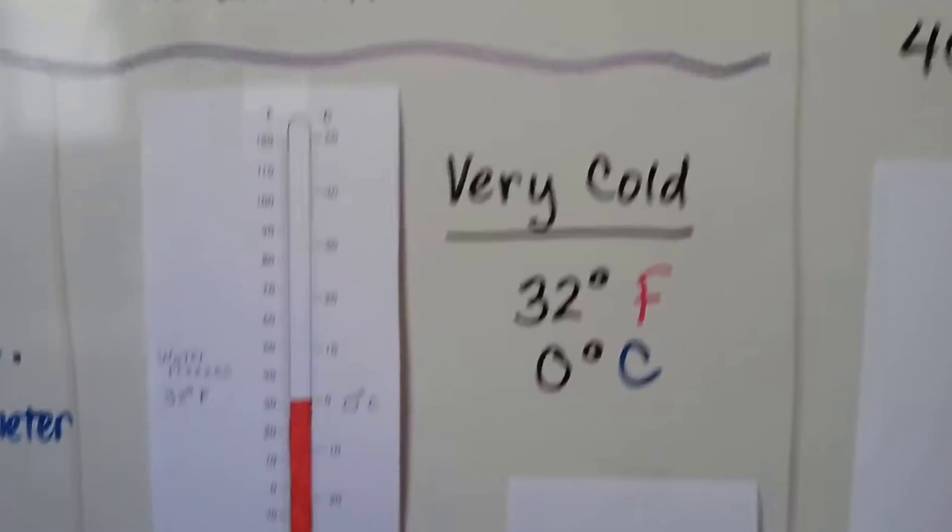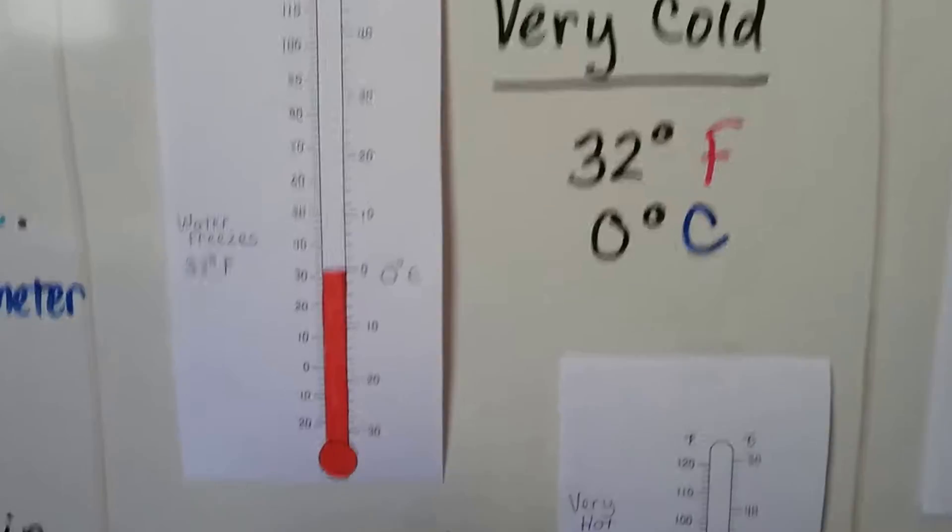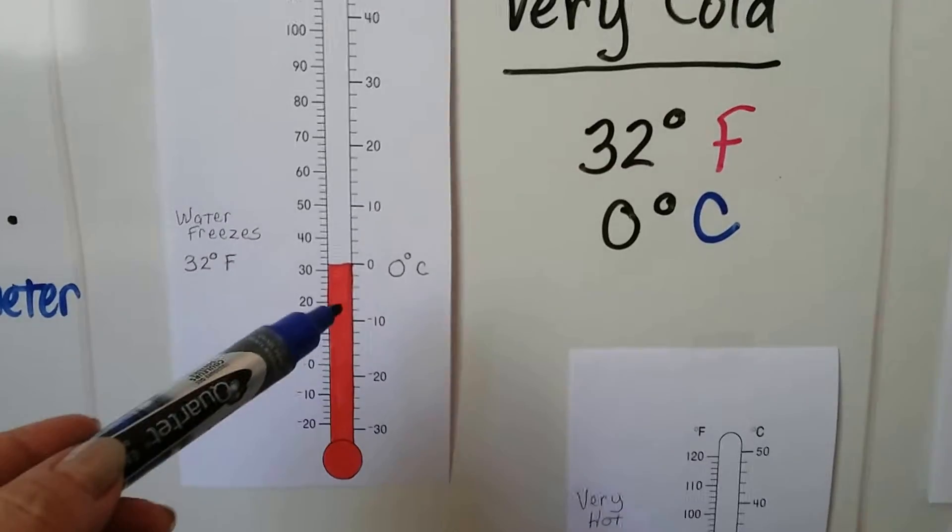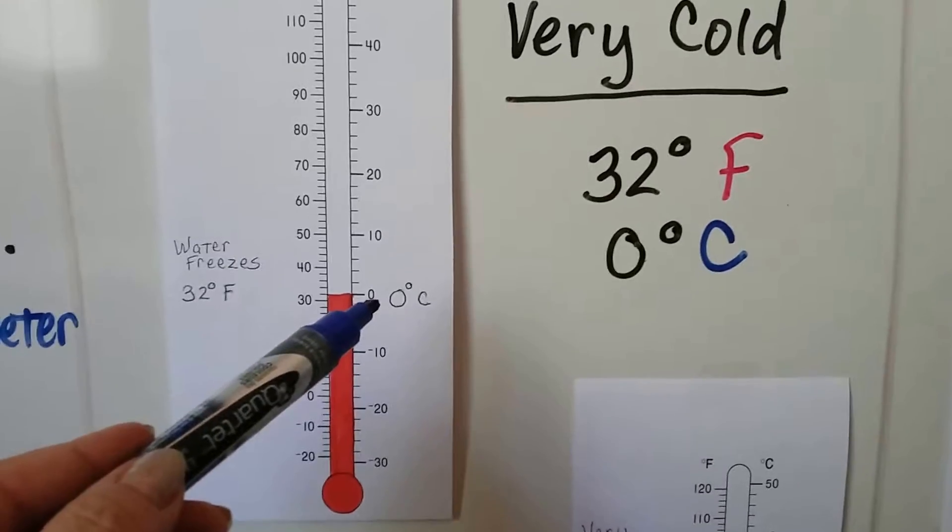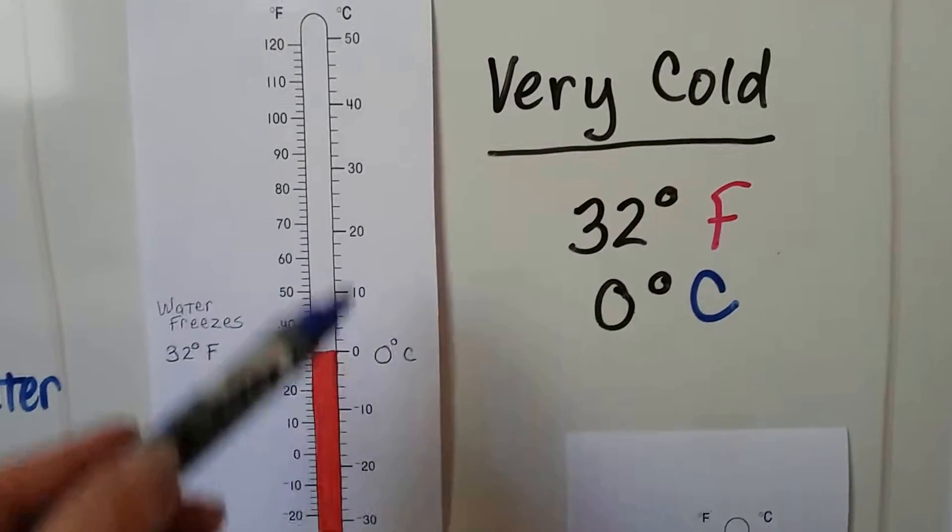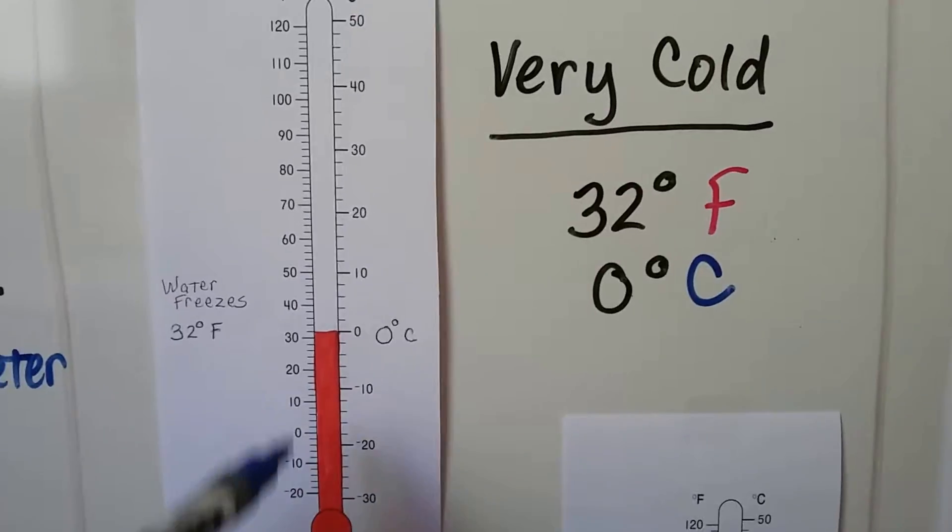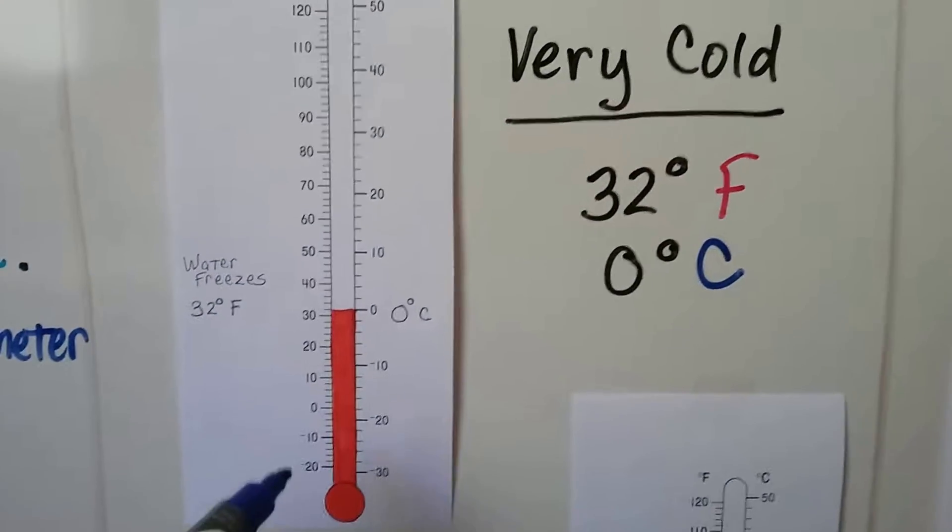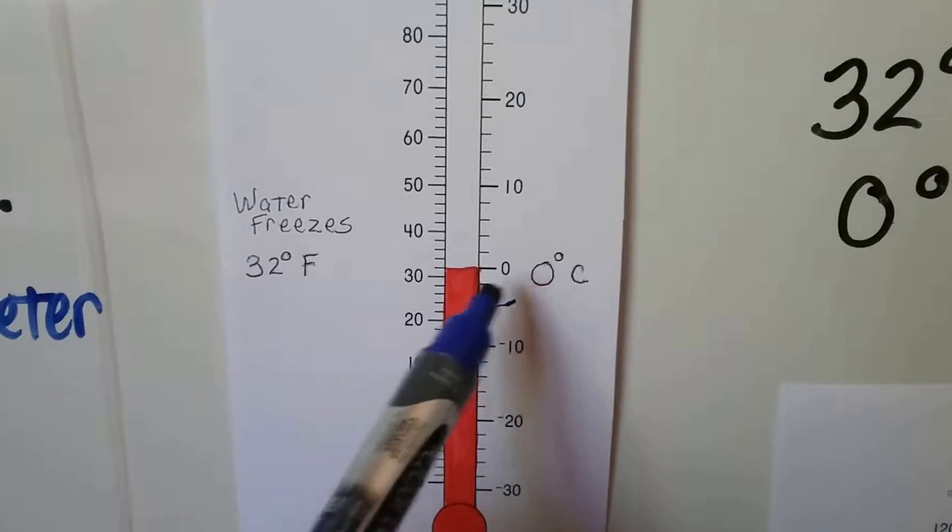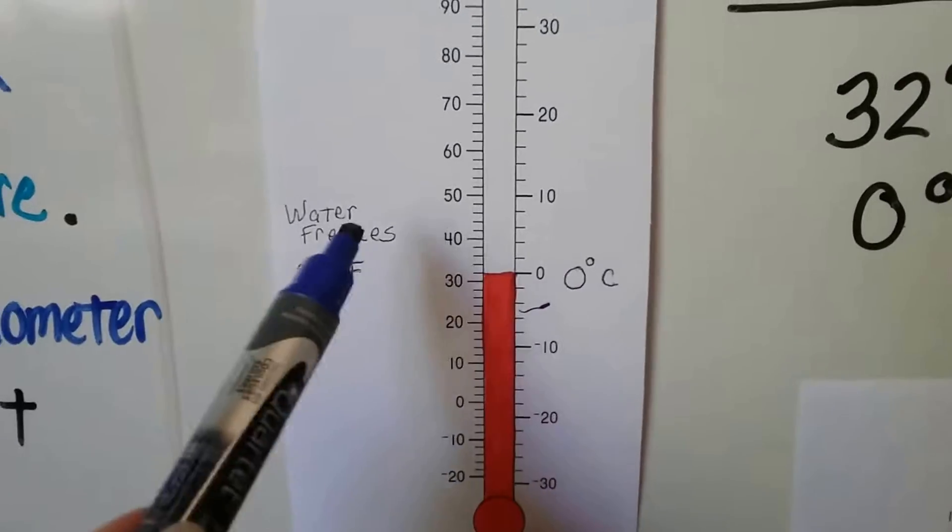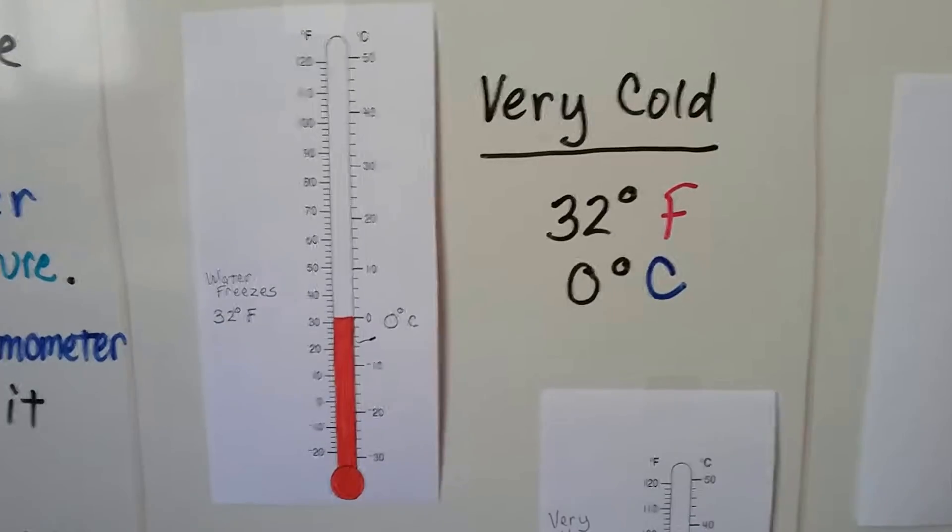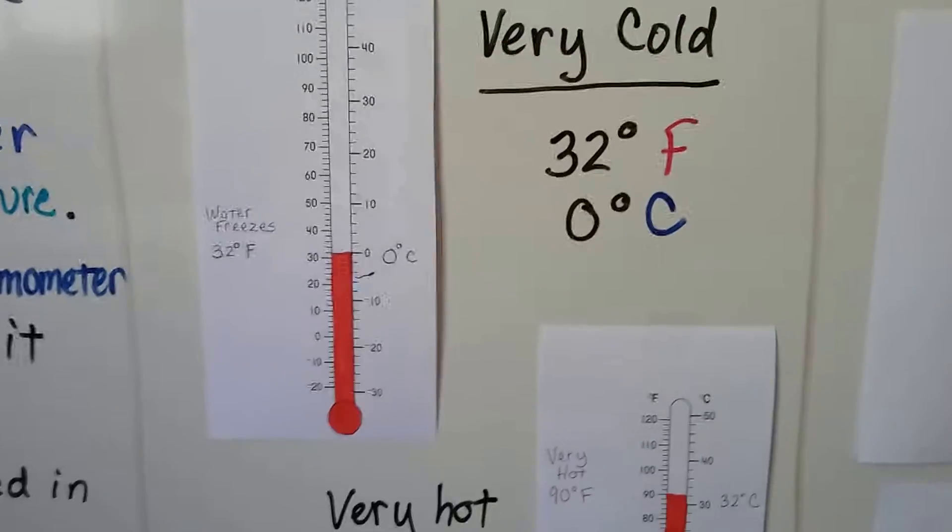When you look at a thermometer, we can see this red liquid here. See that? When it's at zero degrees Celsius, this side of the numbers on the thermometer is Celsius and this side is Fahrenheit. For Celsius, when it's at zero, and Fahrenheit, when it's at 32, that's where water freezes. That's when it's very cold. 32 degrees Fahrenheit or zero Celsius.